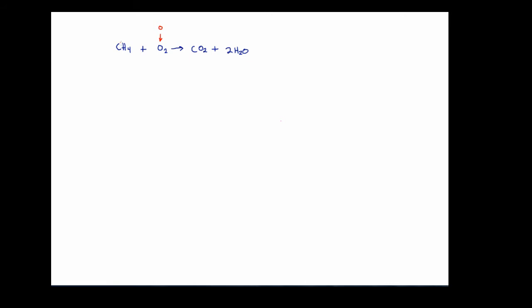Let's begin with CH4. We're going to set up a simple equation, recognizing that the sum total of the oxidation numbers — which are theoretical charges — on the elements within this compound must all sum to zero. The carbon is the unknown. The hydrogen is known: for hydrogens found in compounds, most of the time H is present with an oxidation number of plus one, because it appears in Group 1A, and elements in Group 1A ionize to form plus one cations.